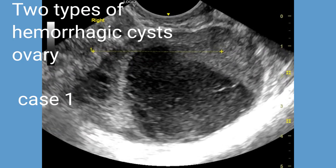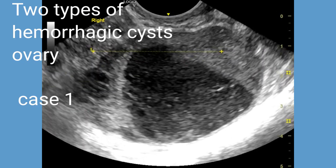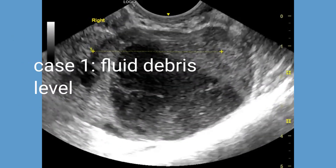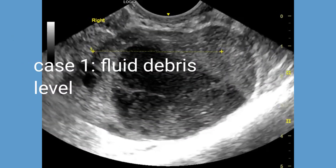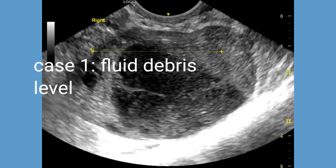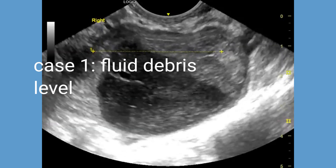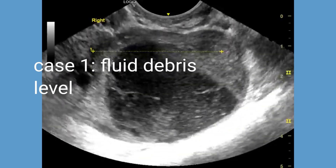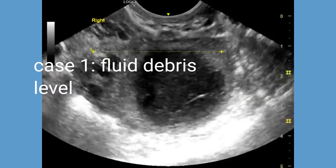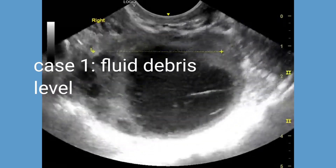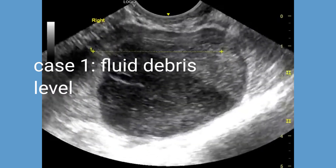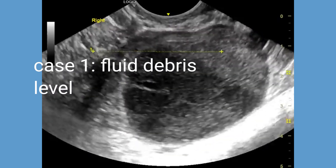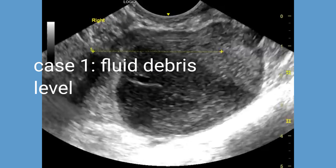This cyst shows the fluid debris level in a hemorrhagic cyst, which refers to the layering of different materials within the cyst. Typically, there is a separation of the more echogenic or brighter debris towards the bottom of the cyst and the less echogenic, darker fluid above it.